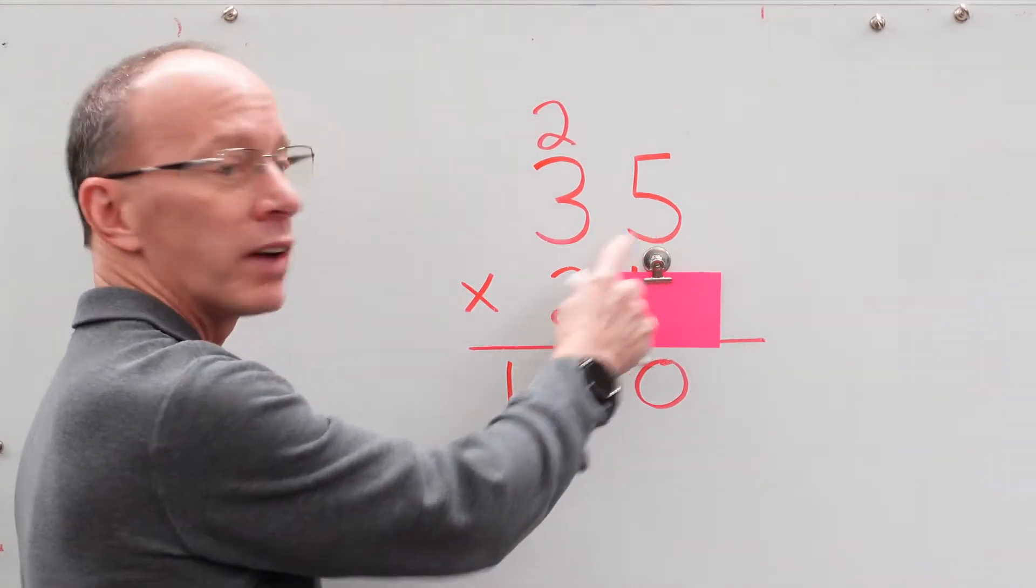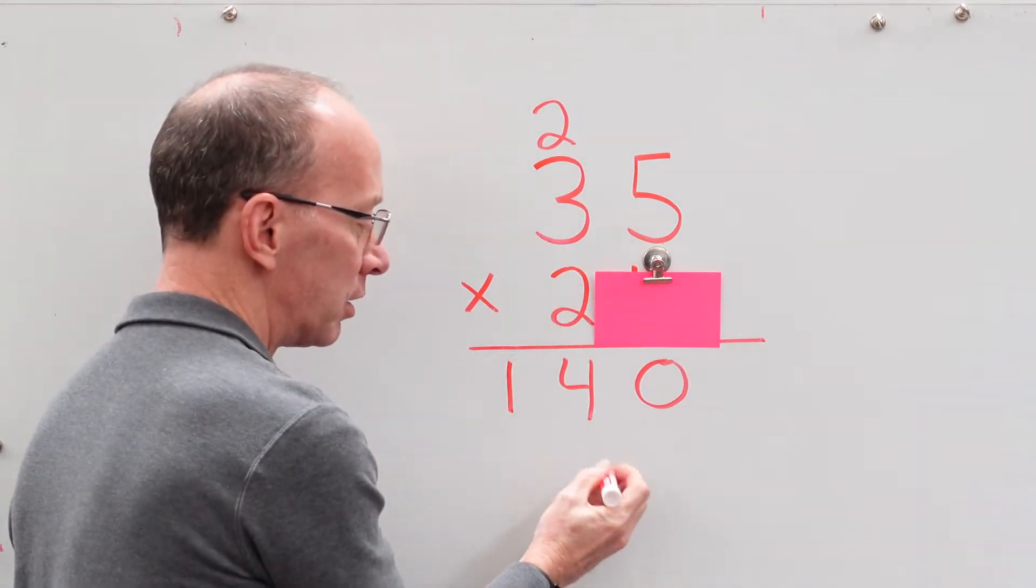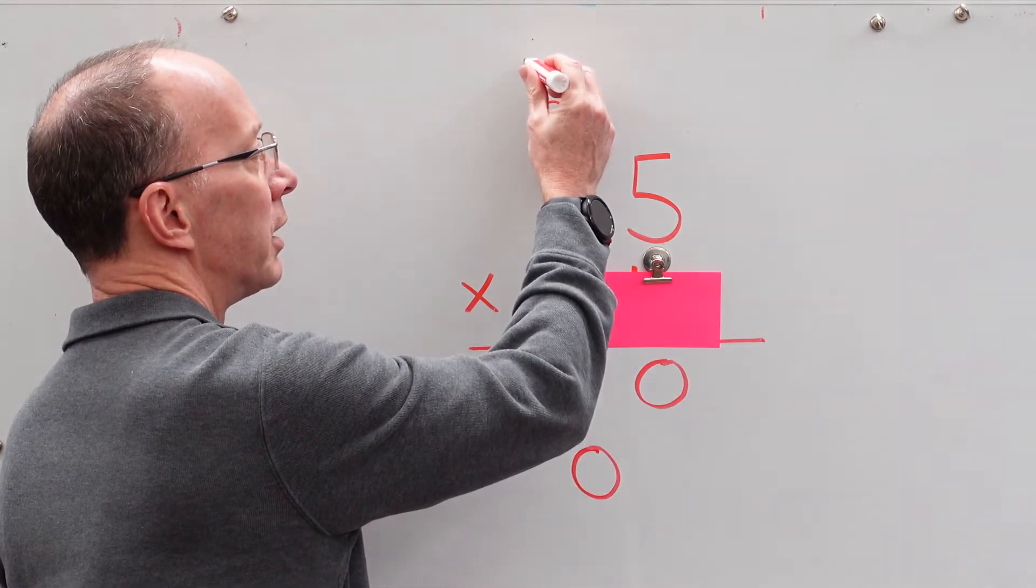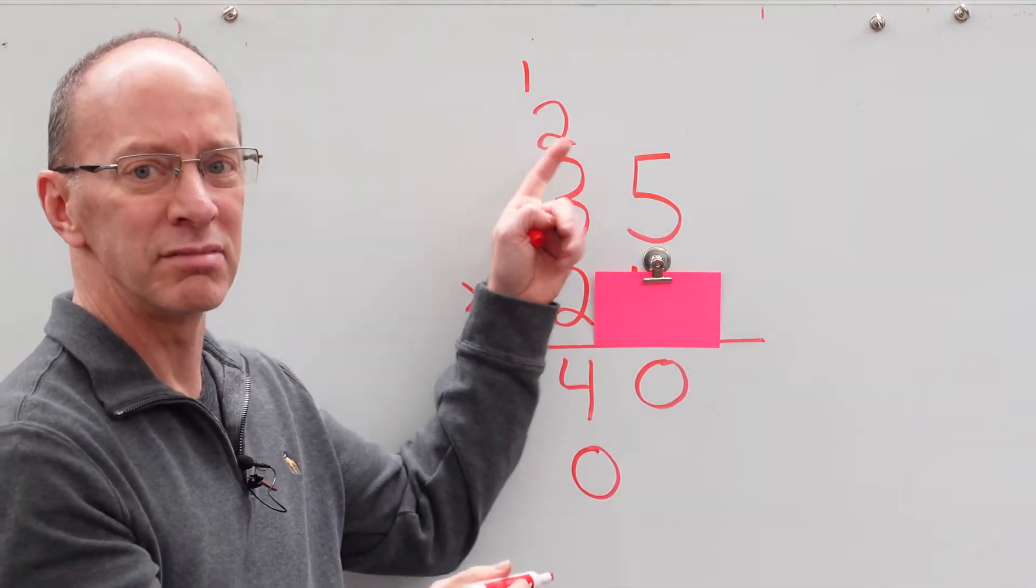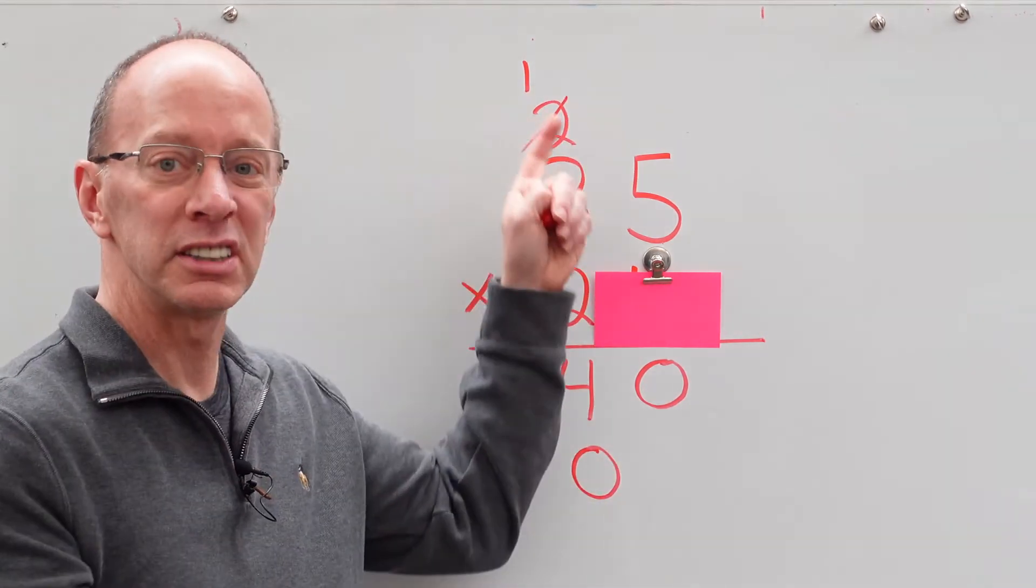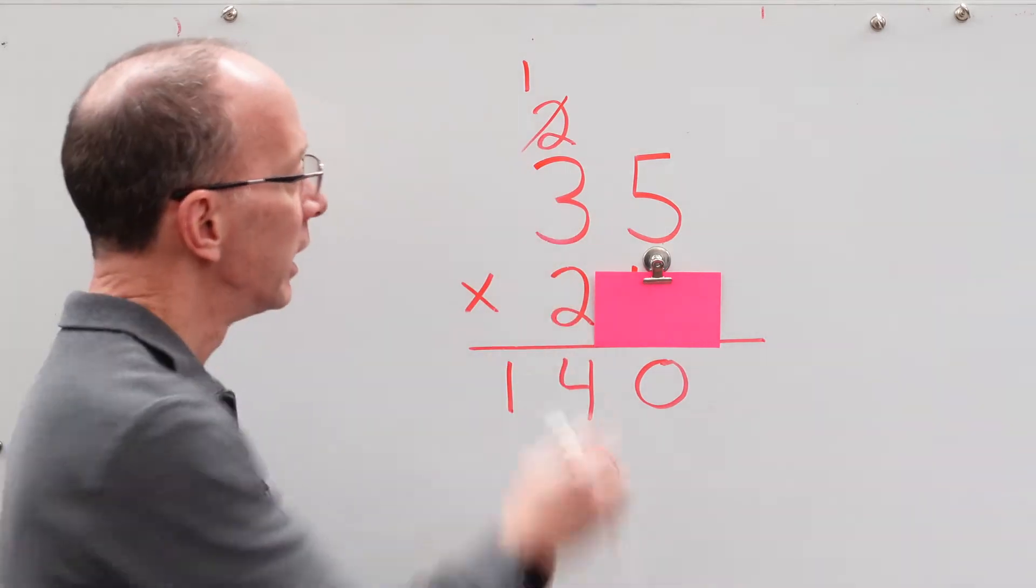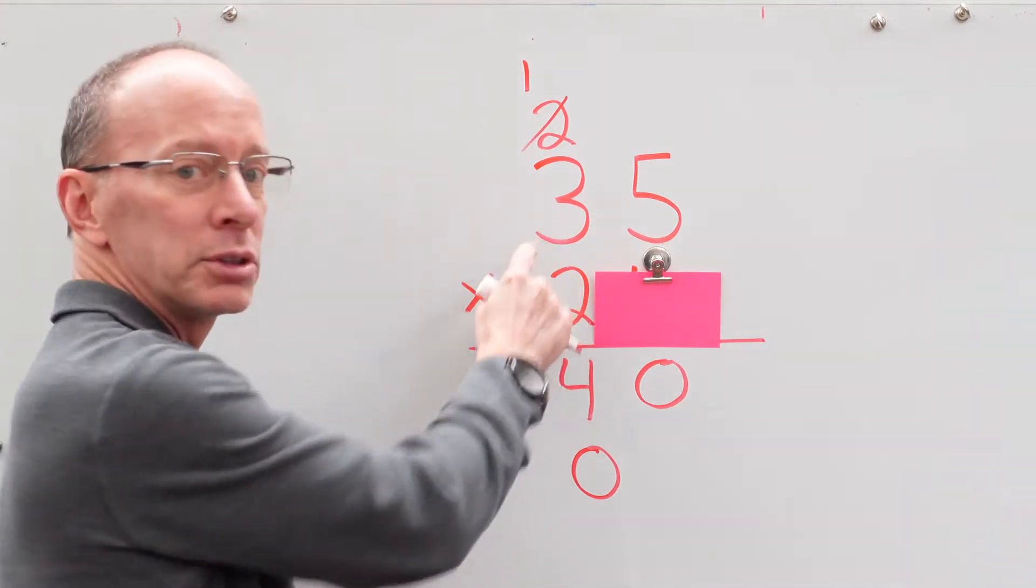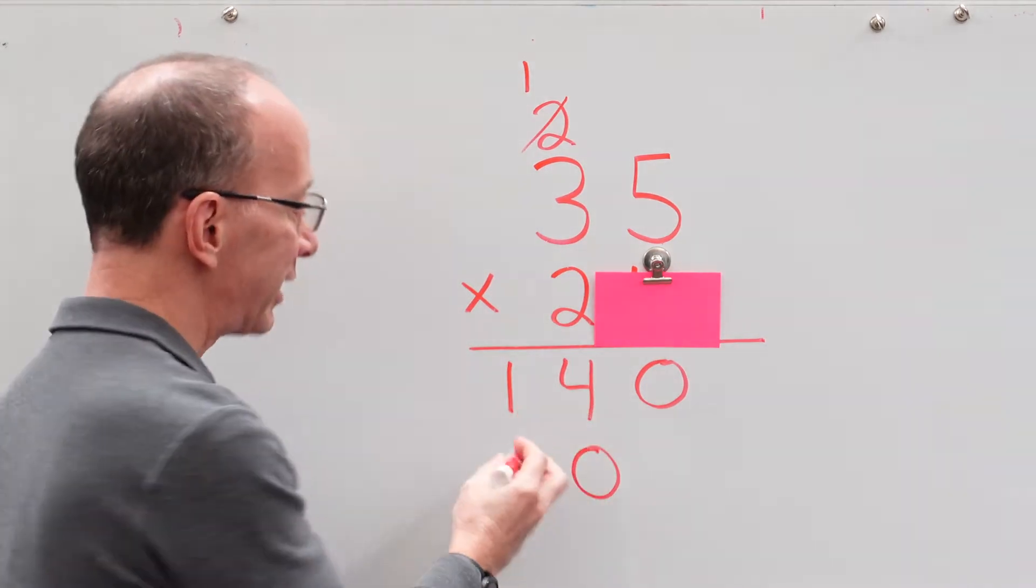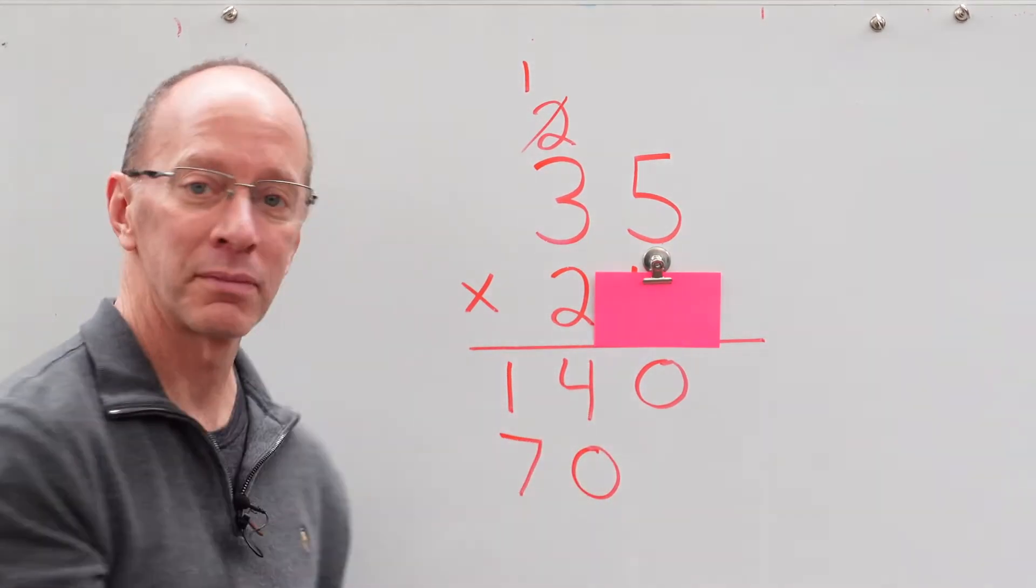So 2 times 5 is 10. We're going to put the 0 right here, and we're going to put that 1 up here. Now, this 2, just ignore it. Just kind of cross that out. And now we're just dealing with just this 1. All right? So now we're going to take 2 times 3 is 6, plus the 1 is 7. Sent from heaven. Okay.